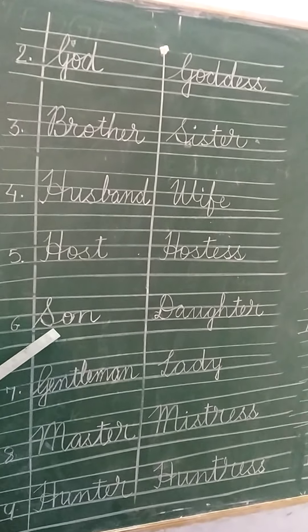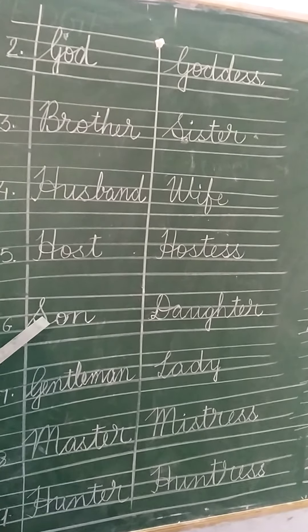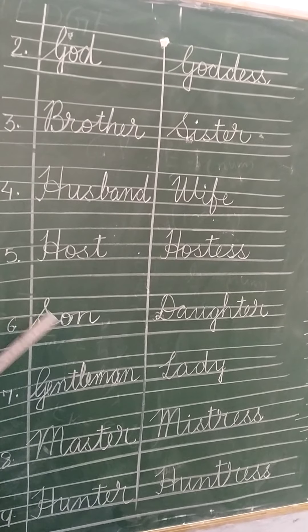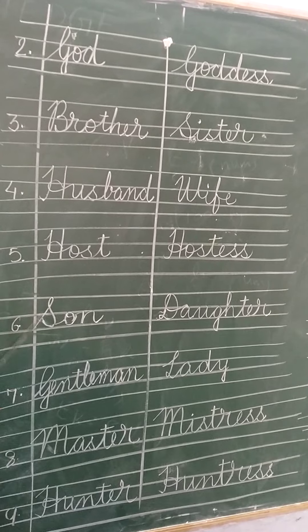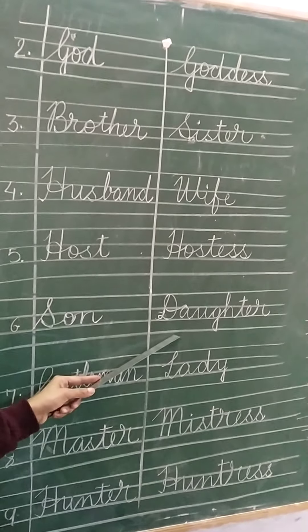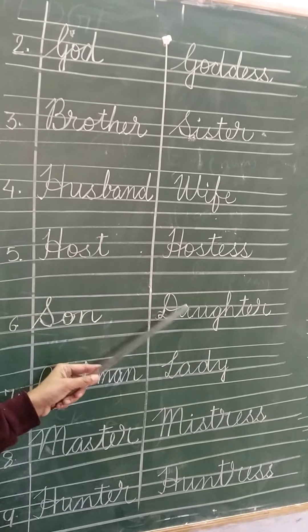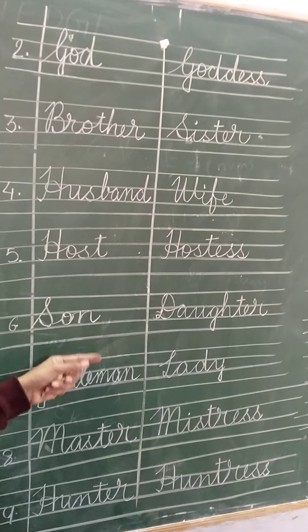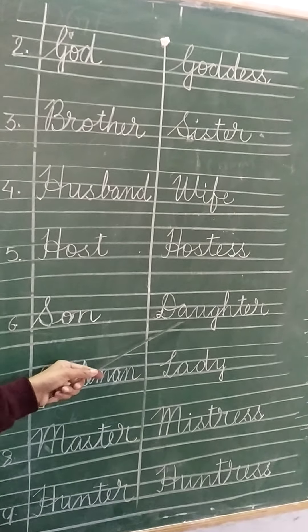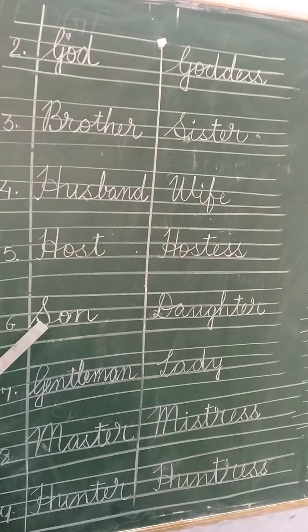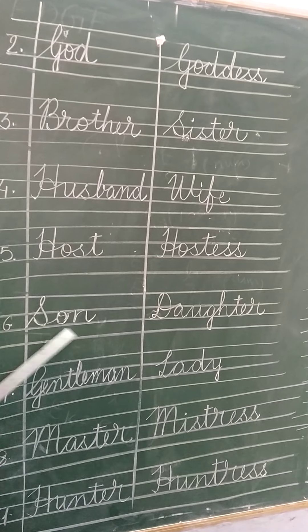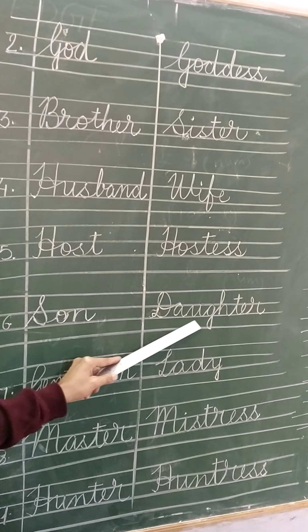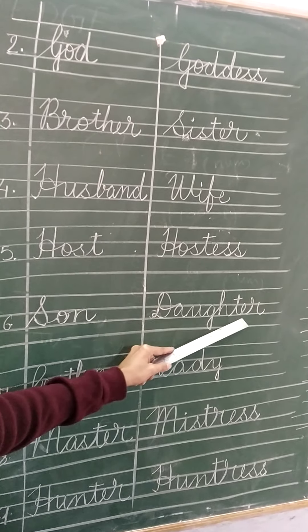Son — the boy is the son of your father and mother. And the daughter is the girl. S-O-N — son. D-A-U-G-H-T-E-R — daughter.